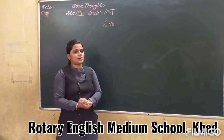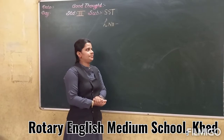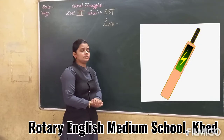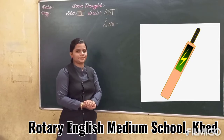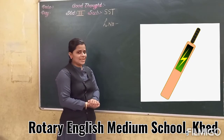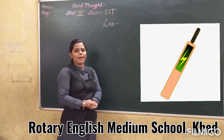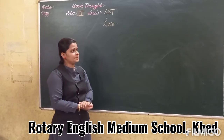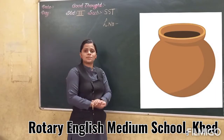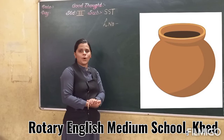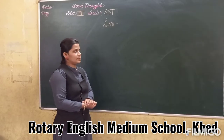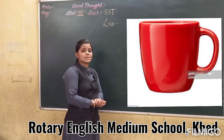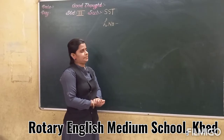Now my dear children, look at the picture. Can you name this object? Yes my dear children, it is a bat. Now look at another picture. This is a pot. Now look at another picture. This is a cup.